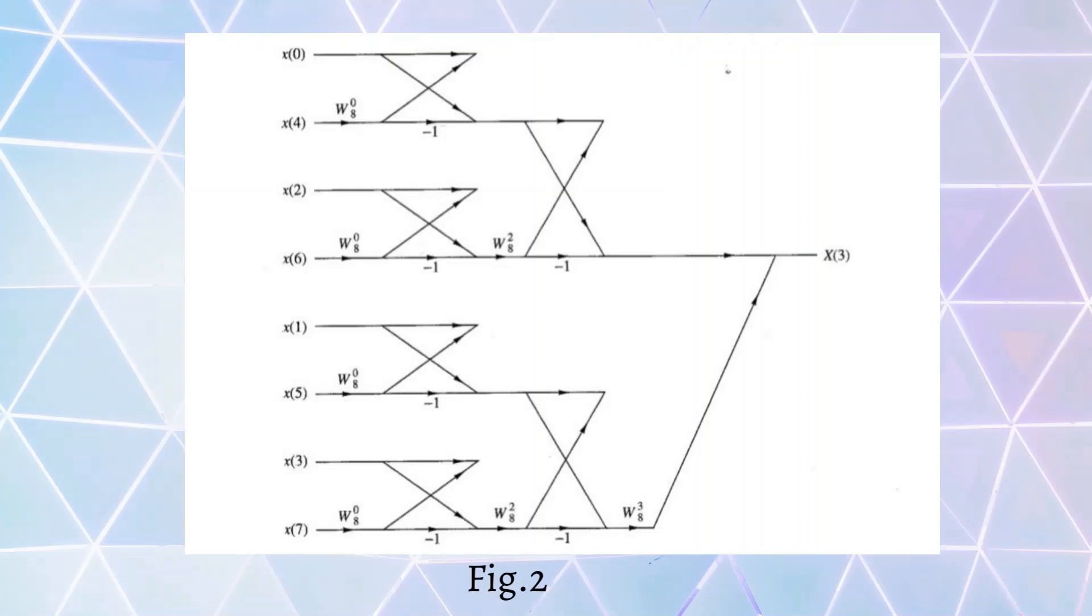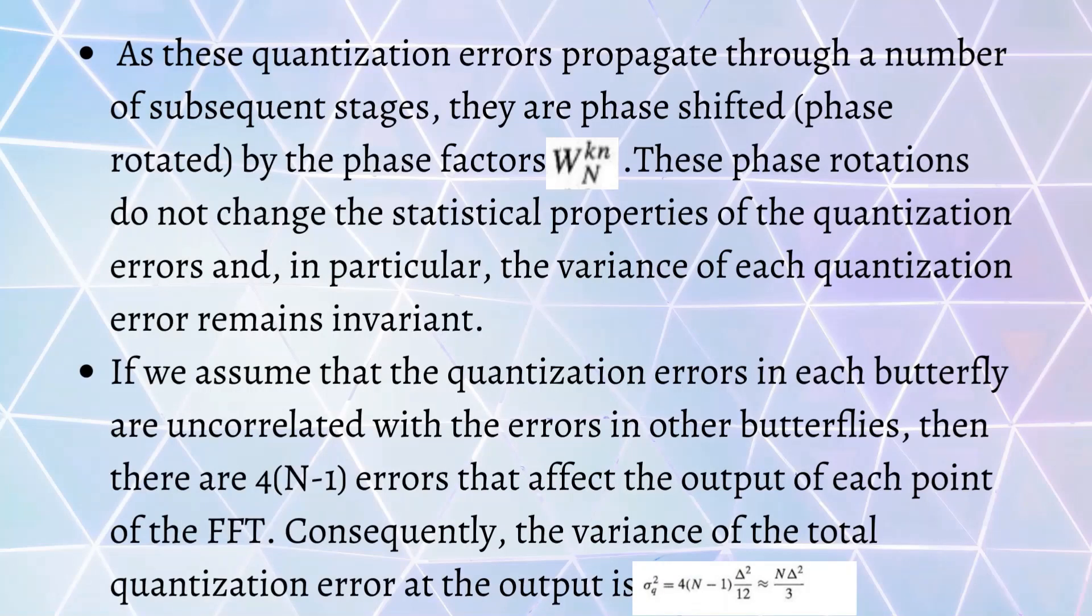If we take this example in this figure, we are calculating X(3). To calculate X(3), we have to calculate the intermediate values which will help in propagating quantization errors to the next stage. As these quantization errors propagate through subsequent stages, they are phase shifted by a phase factor W_N^k.